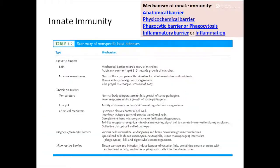Continuing with physiological barriers: among these, the most important are temperature and low pH. Our body normally has a temperature of 37 degrees centigrade, which inhibits the growth of some pathogens. When pathogens enter the body, our body responds by increasing its temperature to inhibit pathogen growth. This immune response involving an increase in body temperature to inhibit pathogen growth is commonly called fever.